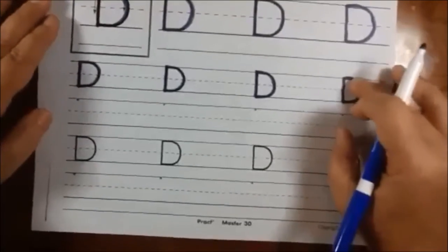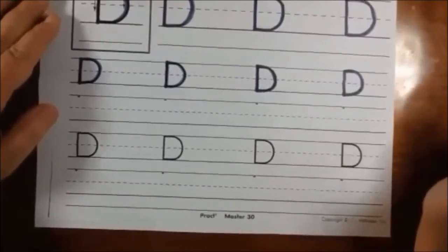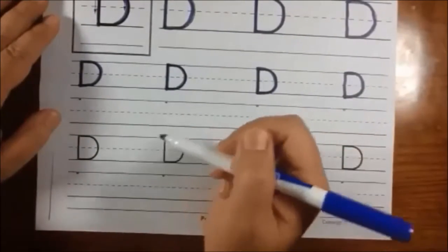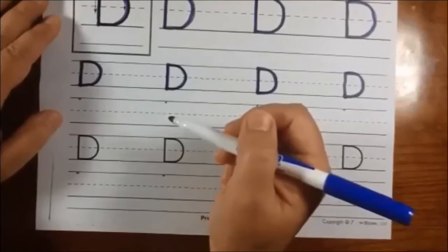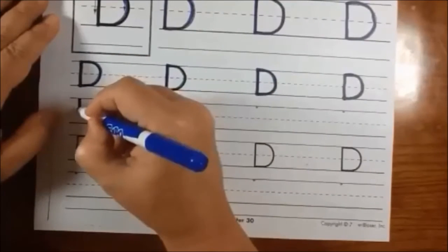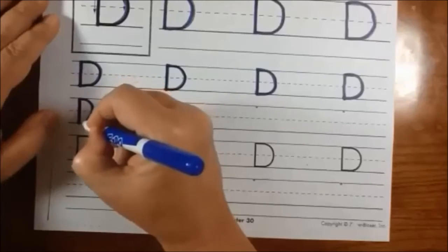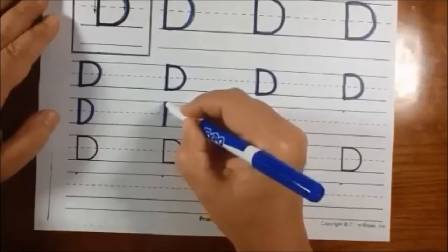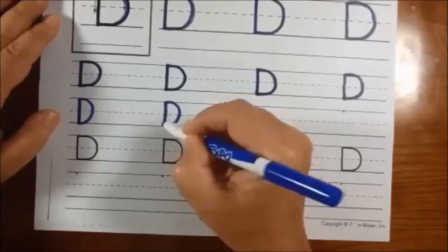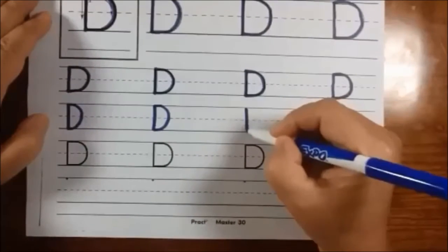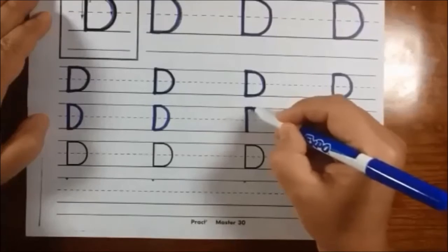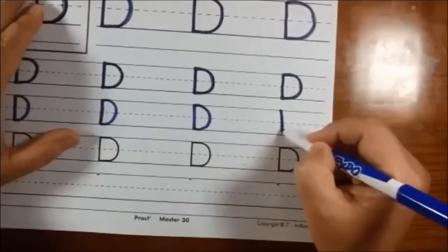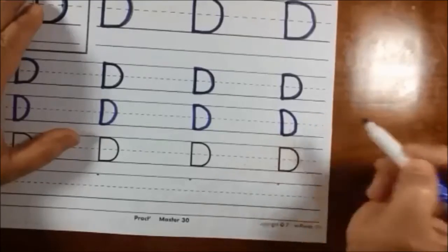We're going to try some without tracing. So on our own. And again, you see the starting dots that they've given you. That tells you where to start. So we're going to go down, up, and around. Down, up, and around. Or down, pick up your pencil to the top, and around. Down, pick up your pencil to the top, and around.